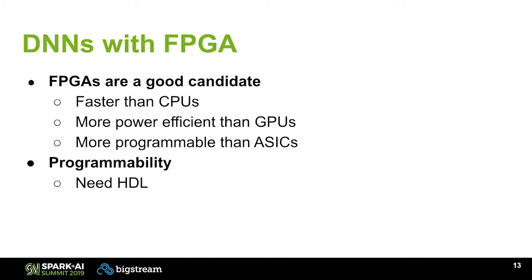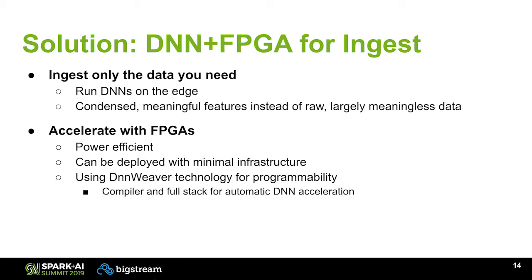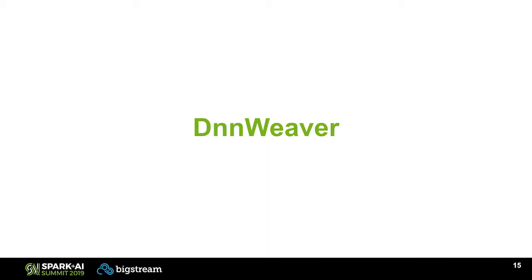Our solution is a full solution for combining DNN and FPGAs to reduce the ingest bottleneck. For the programmability problem, we have a product called DNN Weaver, which is a compiler and full stack for complete automation of DNN acceleration. Data scientists can write their program in TensorFlow or PyTorch without changing any line of code or dealing with complex toolchains, and it can automatically run on FPGA. It can be deployed with minimal infrastructure, making the architecture we just proposed a reality. I'll now pass it to Blake, who will give more details on DNN Weaver and the proposed Spark Weaver architecture.